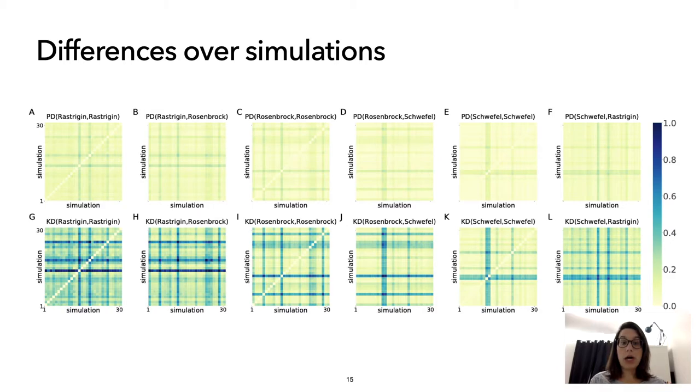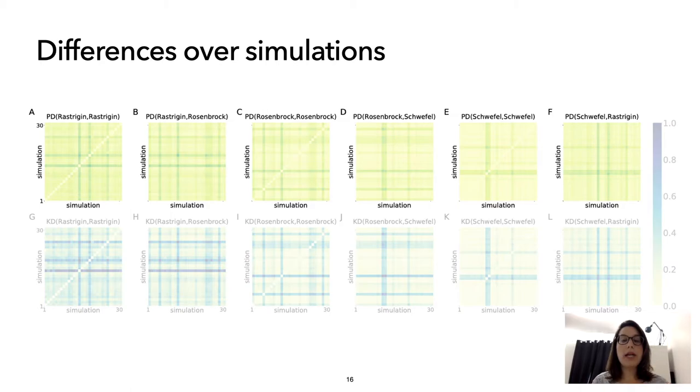And values close to one means that high differences are noticed on the network structure or the network flows. So we start now with the network structure. We see that values are mostly colored by yellowish, representing that the networks have similar structures, regardless of the simulation and regardless of the function.